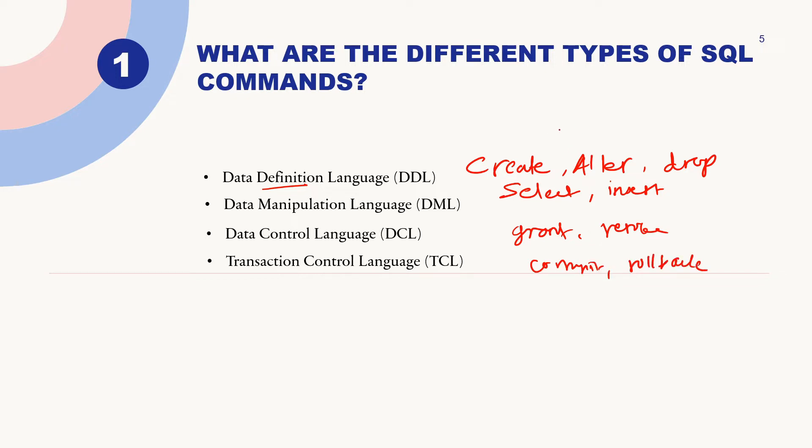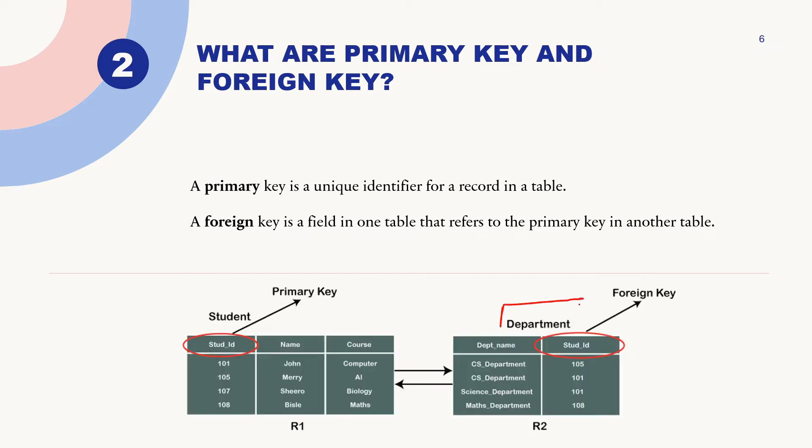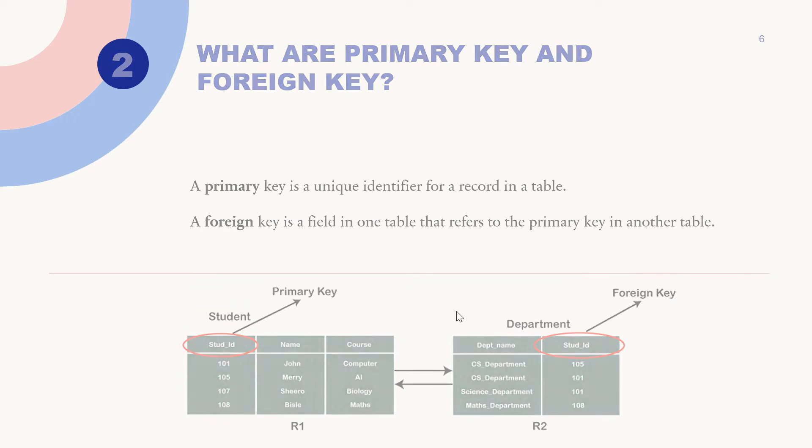The question is: what are primary key and foreign key? Primary key is a unique identifier for recording in the table, and foreign key is a field in one table that refers to the primary key in another table. For example, this is a department table and this is a student table. The primary key student ID in the student table is acting as a foreign key in another table because it's joining on another table.